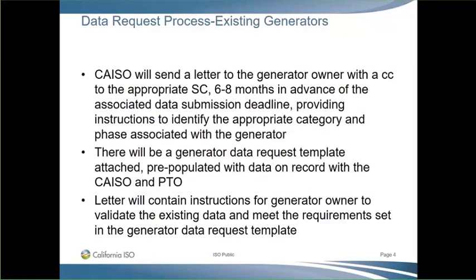Over the next two slides I'll give an overview of the data request process. We split it into two sections: one for generators that are existing and currently commercial in the ISO market, and the next slide outlines the process for generators reaching commercial operation in the future — referred to as new resources. Now that the BPM is effective, the ISO will begin sending letters to each generator owner with a CC to the appropriate scheduling coordinator. These letters will go out at least six to eight months in advance of the submission deadline. The letter will identify the spreadsheet that the generator needs to look at and provide guidance on how to submit the data via email in a specific format.